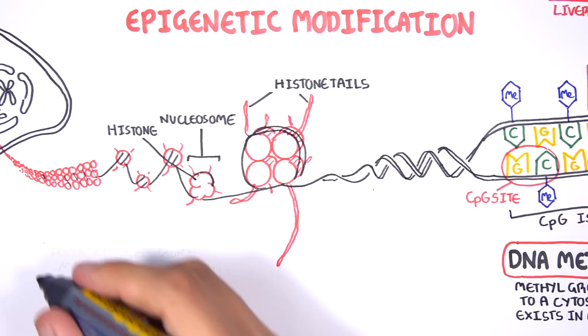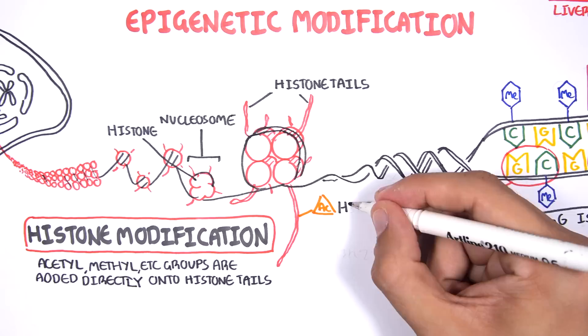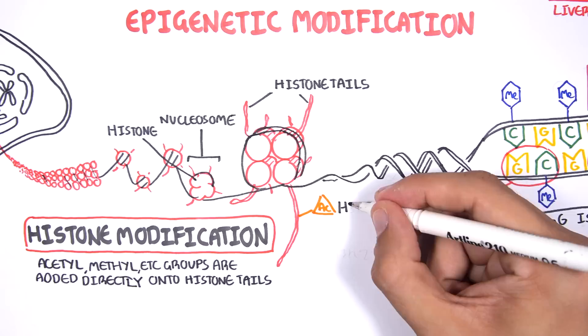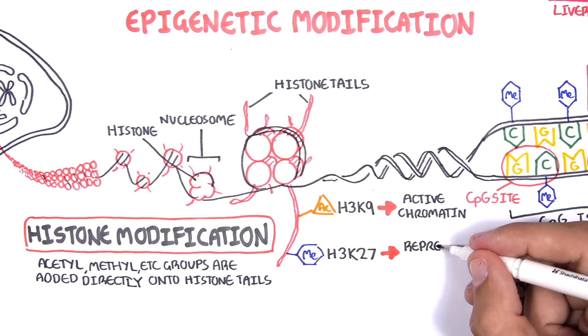The second type of epigenetic modification is histone modifications. This is where acetyl or methyl groups are directly added onto histone tails, and this will modify gene expression. For example, histone 3K9 acetylation correlates with transcription activation, and histone 3K27 trimethylation with transcription repression.